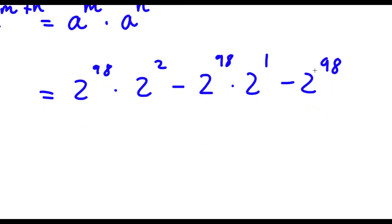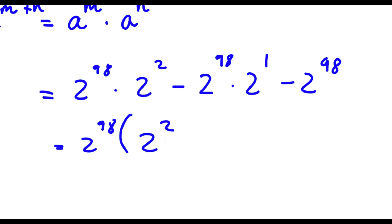Now from here you can see that all three of these terms have 2 to the power of 98 in them. So if I factor out 2 to the power of 98, the first term gives me 2 to the power of 2, the second term gives me negative 2 to the power of 1, and the third term gives me negative 1.